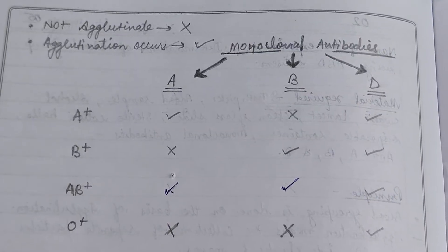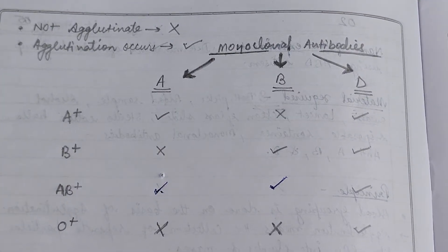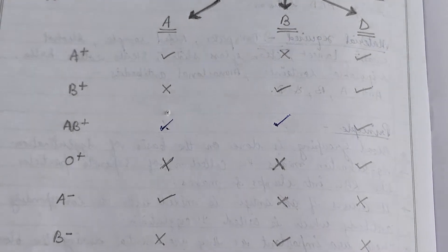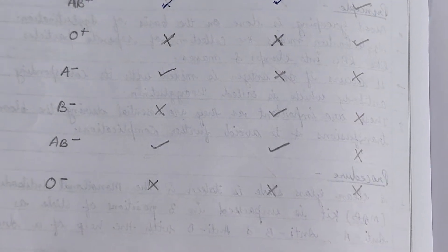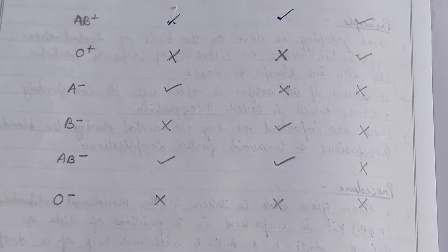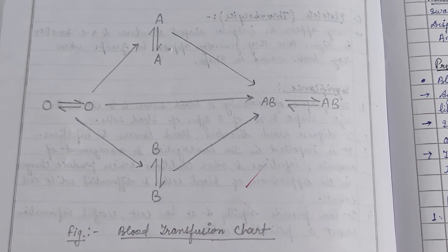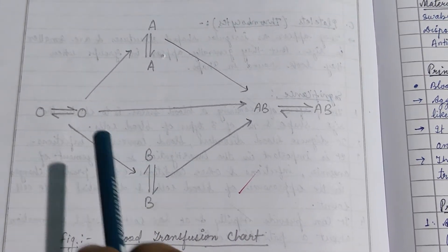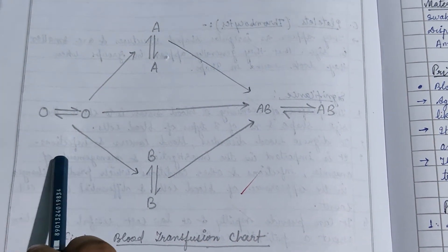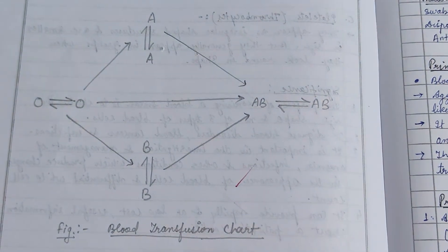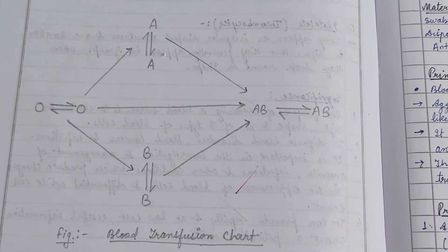The significance is as follows. Here is a chart of the monoclonal antibody, the ABO anti-sera, and the blood groups, showing which will agglutinate or not, indicated by tick and cross signs. This blood transfusion chart shows that the O blood group is a universal donor, while the AB blood group is the universal recipient. That is all — thank you, keep watching.